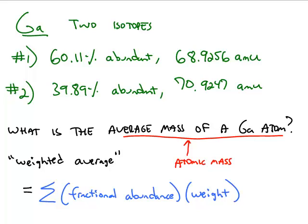For example, gallium exists in two isotopic forms. One has a mass of just under 69 AMUs, and the other has a mass just under 71 AMU, where AMU stands for atomic mass unit.